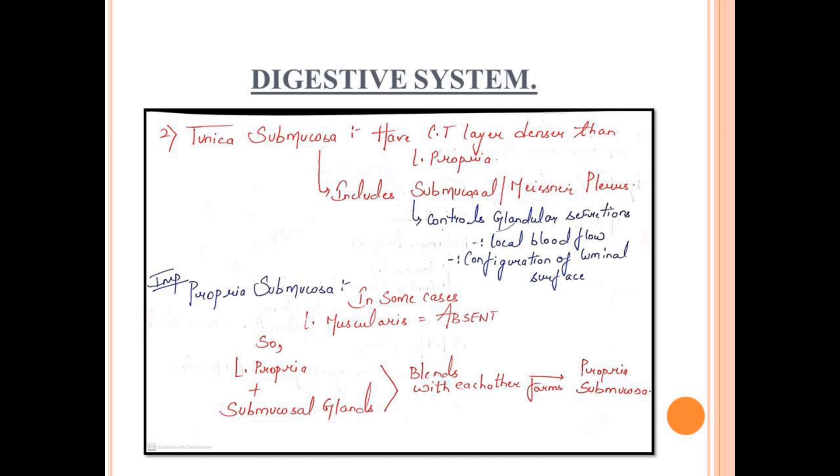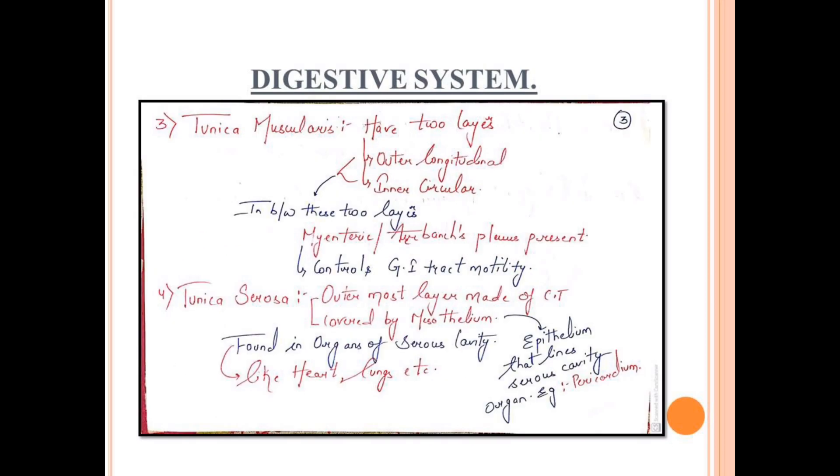Now talking about the next layer, propria submucosa. Propria submucosa is an important topic. In some cases, lamina muscularis mucosa is present or evident. In lamina propria mucosa, run protons, lamina propria submucosa glands and nerves.